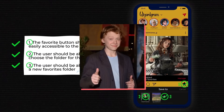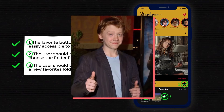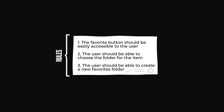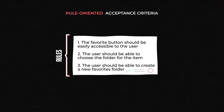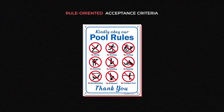It means the feature did its job exactly as was intended, as the user expected. This format of writing acceptance criteria is simple and universal. It's called rule-oriented, and it can even be found in real life, in situations where strict rules are applied. In software development, though, you sometimes need to be more specific.